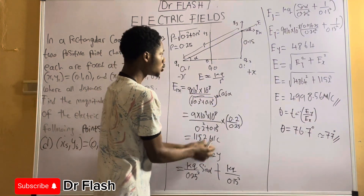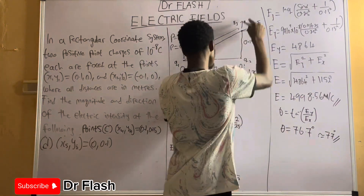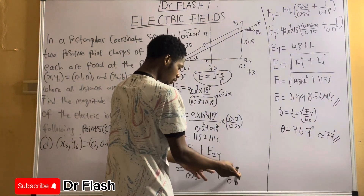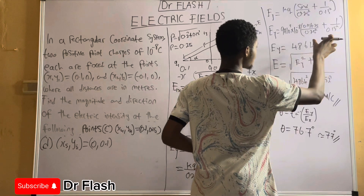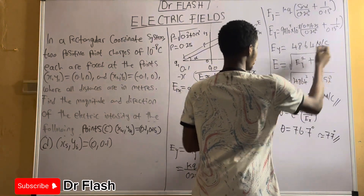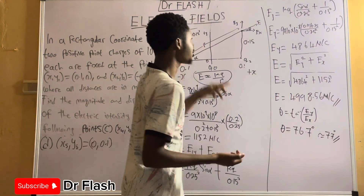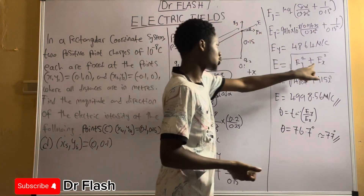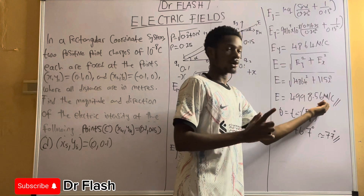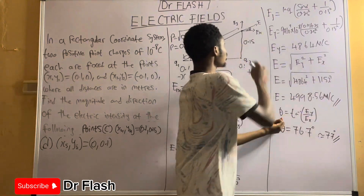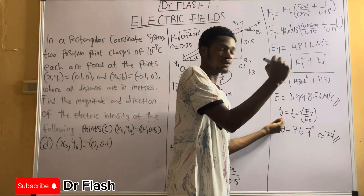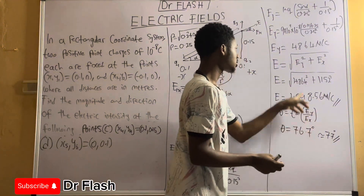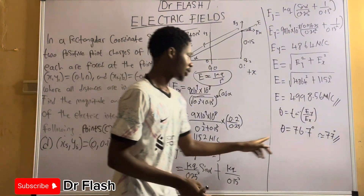For the vertical component, Ey = E1y + E2y. E2y uses the direct formula kq/r² with r = 0.15. Once we factor out kq and substitute values, we get Ey = 4864 N/C. The net field E = √(Ey² + Ex²) gives our correct answer. The direction is tan⁻¹(Ey/Ex) — substituting Ey = 4864 and Ex = 1152.